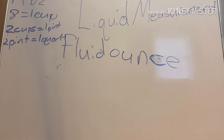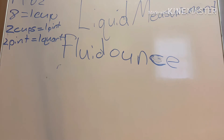Now let's figure out the number of cups in a quart. We know you need two cups for one pint. Since you need two pints for one quart, you need four cups for a quart — because you need to multiply the cups by two times the pints to get there. So four cups equals one quart.